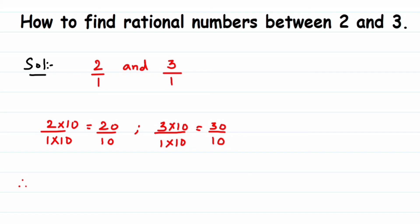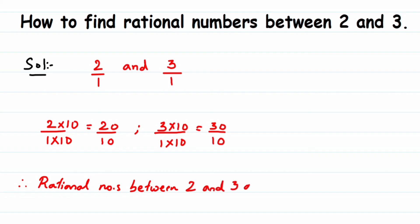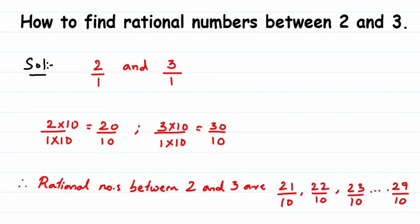Therefore, the rational numbers between 2 and 3 are 21/10, 22/10, 23/10, and so on up to 29/10. One important point: between any two rational numbers there are infinitely many rational numbers, so it's not necessary that everyone's answer matches. My answer may differ from yours or from the textbook — that's perfectly fine. I hope it's clear. If you have any specific questions, put them in the comments and I'll try to make a video on it. Thank you for watching.